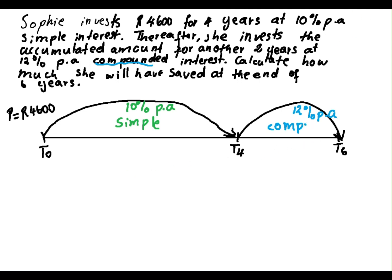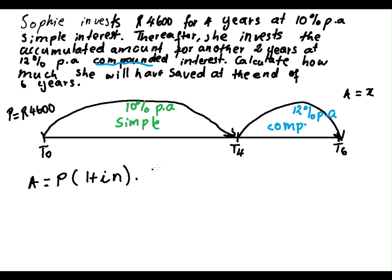Now we can tackle the question. They are saying how much she will have made at the end of 6 years — they want to know our final amount. We are going to first address the first 4 years. We say A equals P(1 + IN) because it was on a simple interest basis. But after 4 years it changes to a compounded one, so we use (1 + I) to the power of N.